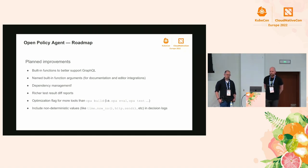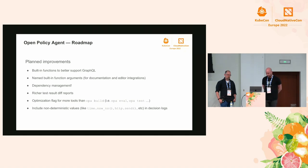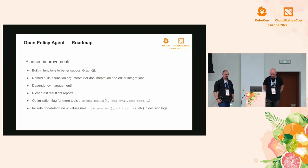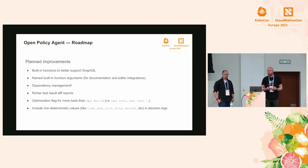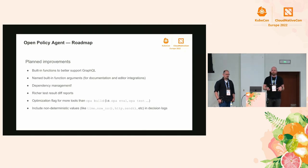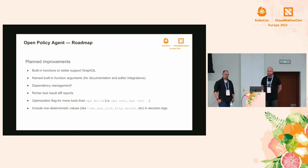Some planned improvements on the roadmap. There's work in progress on built-in functions for working with GraphQL - there's been a lot of demand for that. There are named built-in function arguments, so all built-in functions will have names by default, which editors can use to provide better inline documentation so you don't need to hop back and forth between your editor and the OPA docs. Dependency management is also coming - so you can say this policy depends on another policy somewhere on the net.